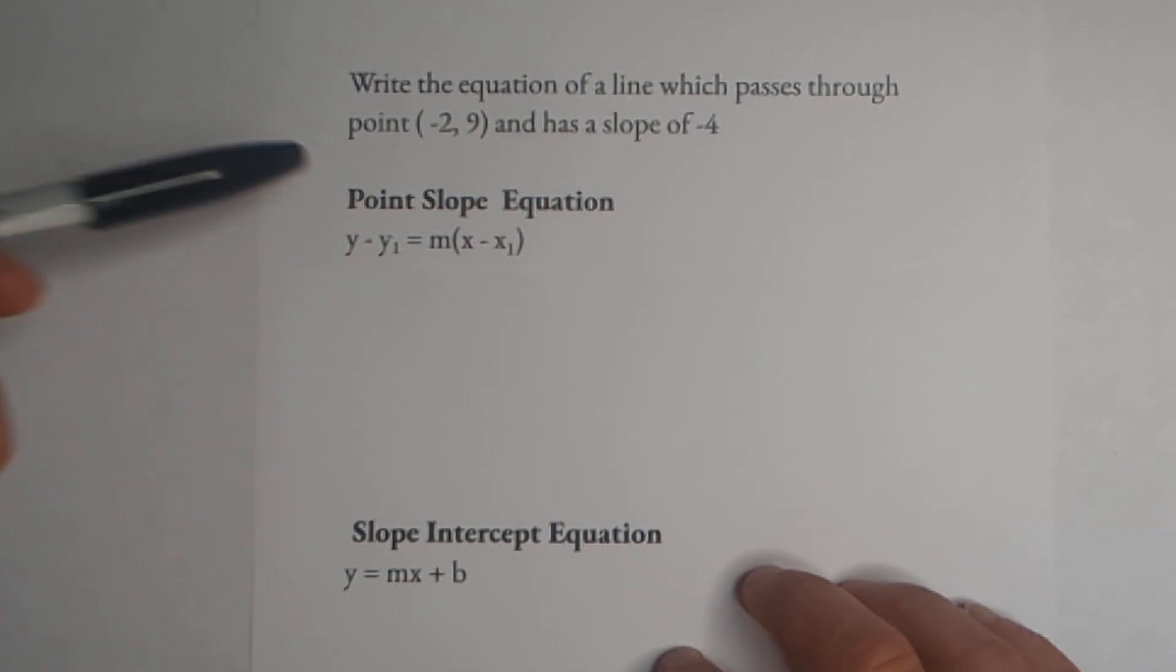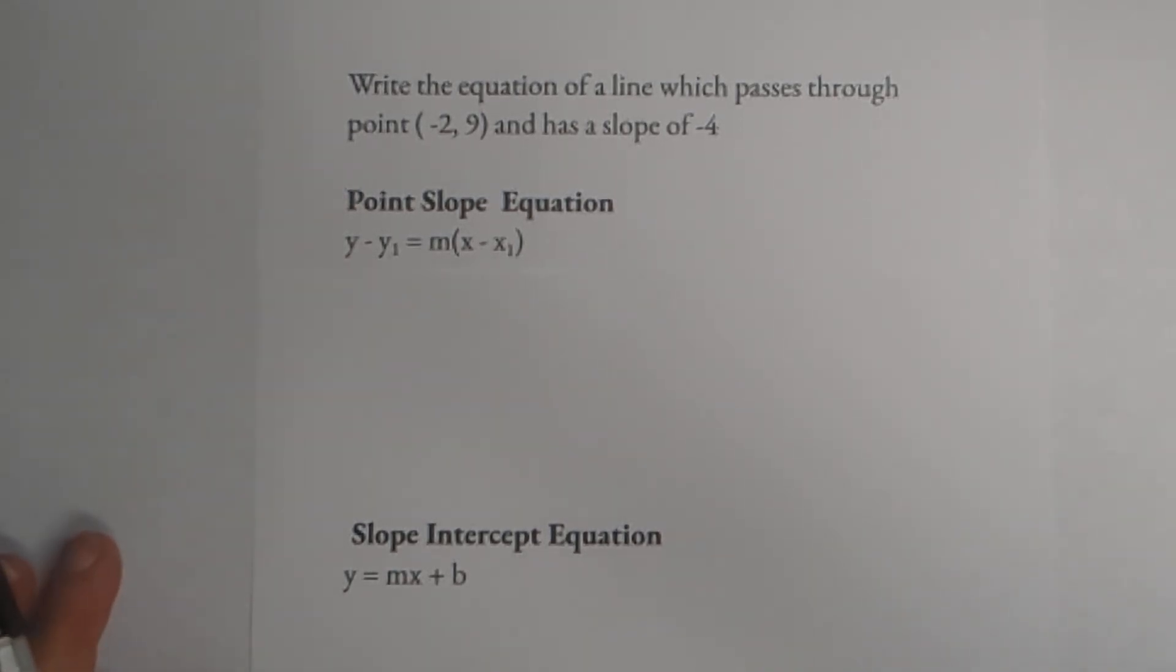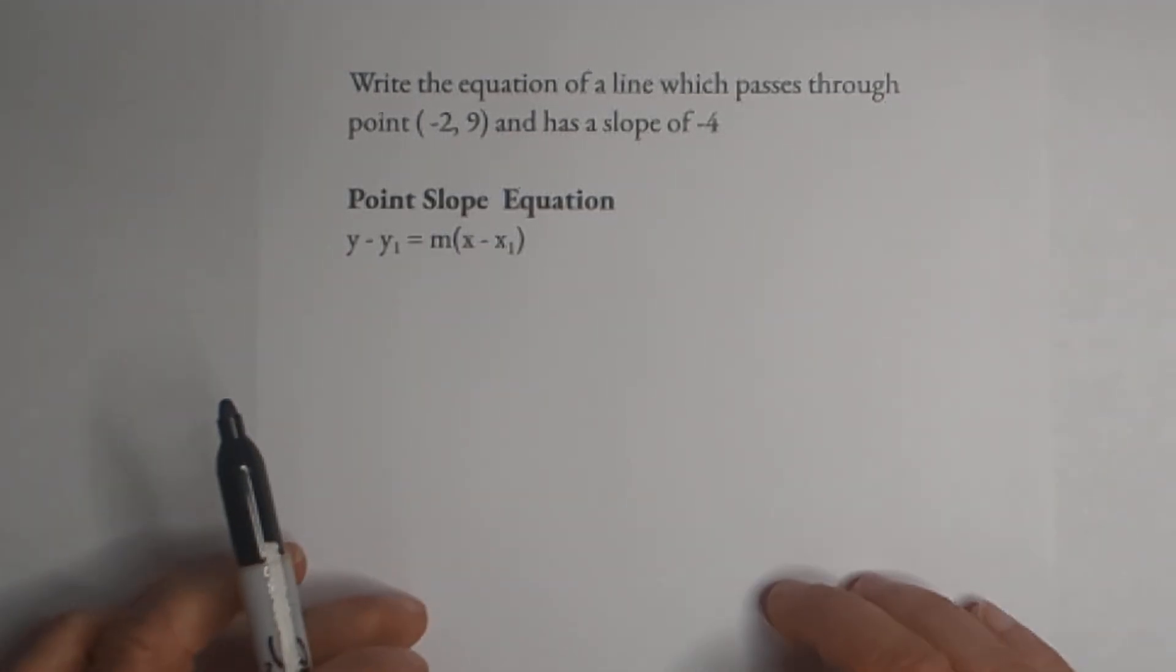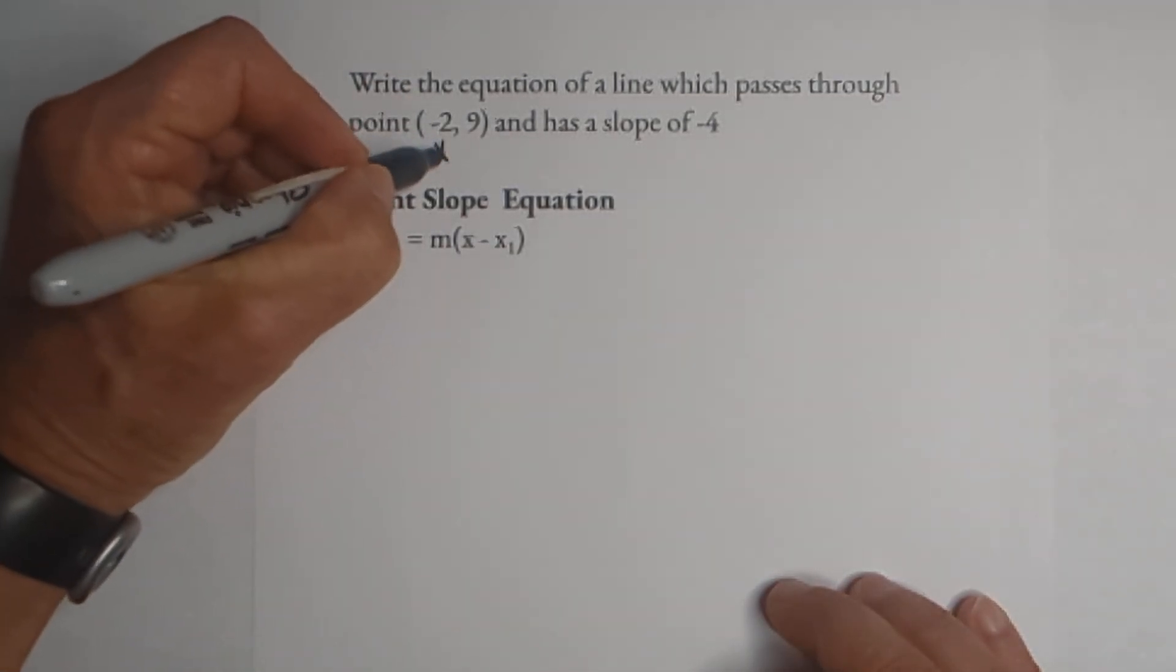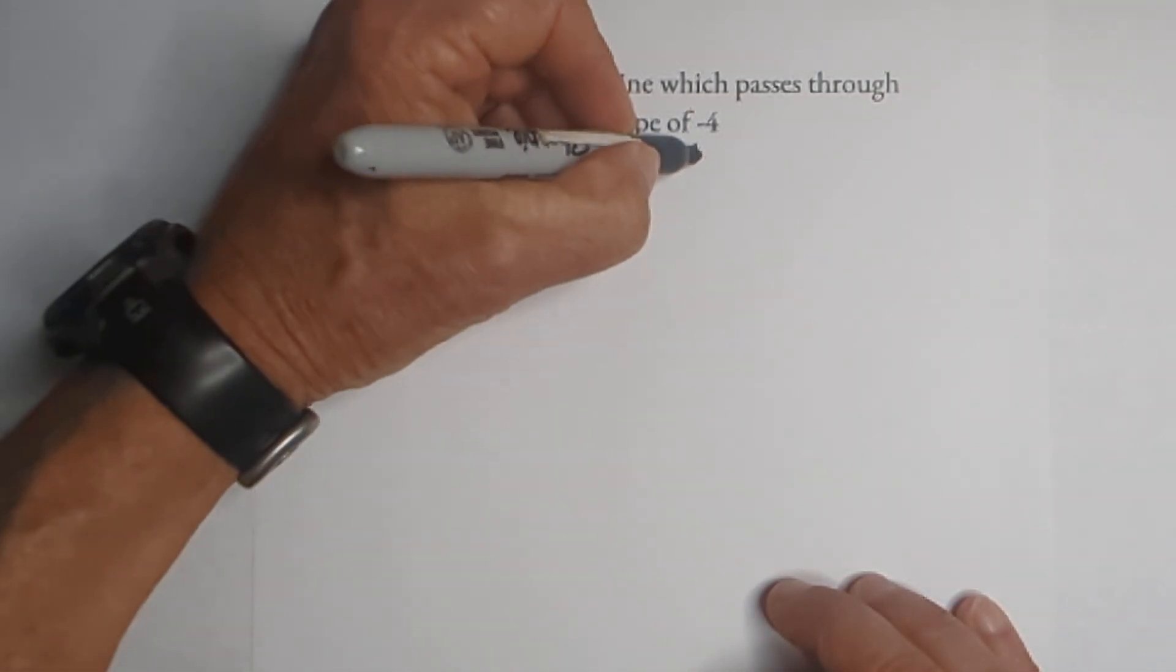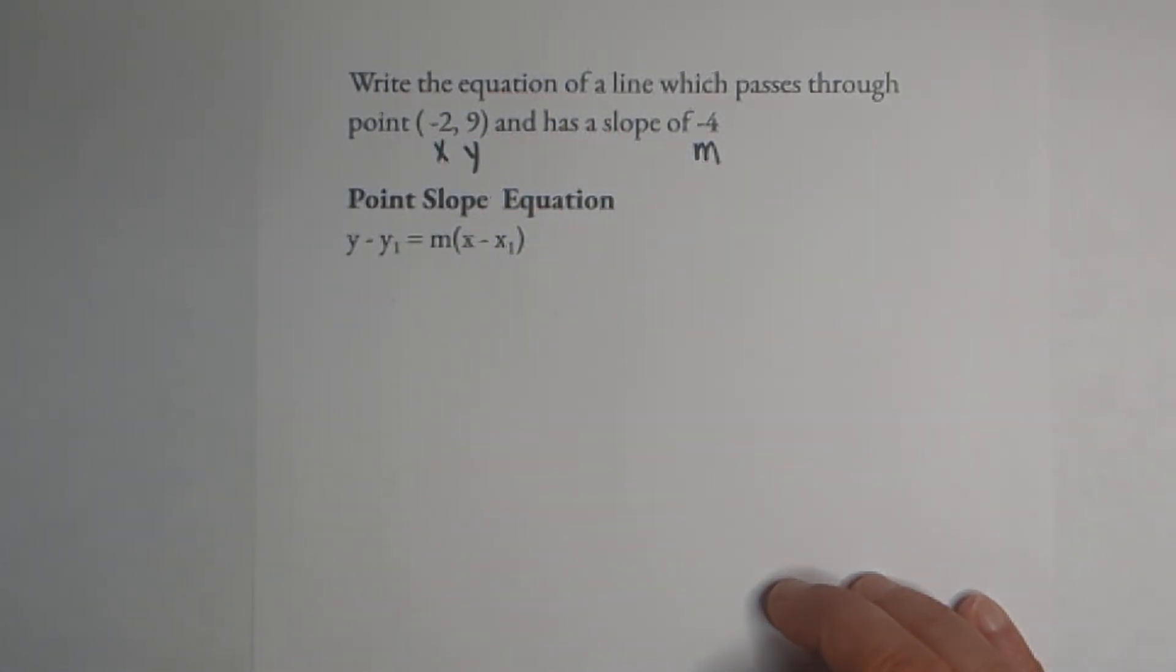Let's get started with the point-slope equation. Let's first see what we have. We know that this is x, this is y, and then this is m which is slope. So let's just plug in what we have.